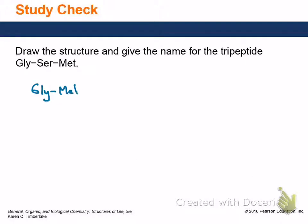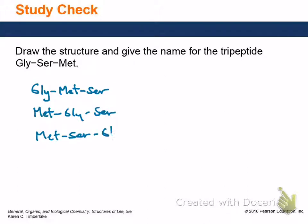Then you could do methionine and serine. You could also have glycine, methionine, serine at the top. Then I could put methionine at the beginning, right? And there could be glycine and then serine. Or I could have methionine at the beginning and I could have serine and glycine.